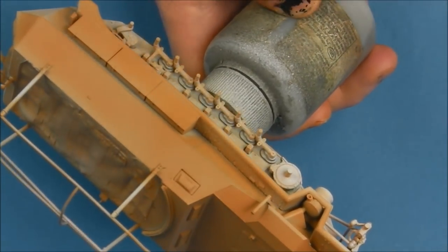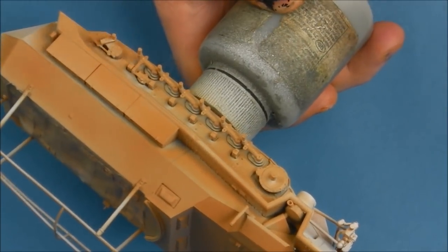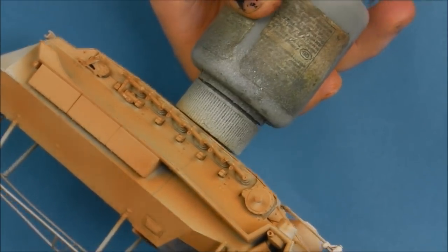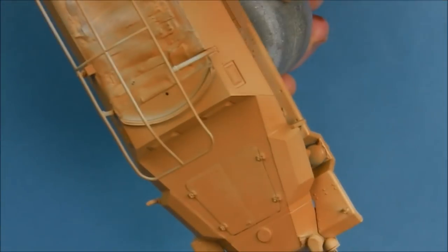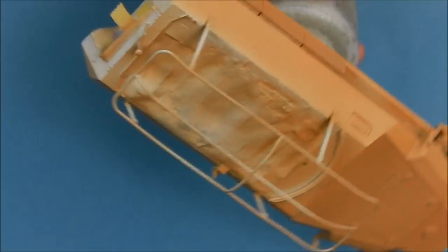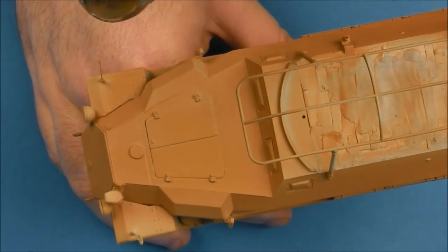I'm just slowly working my way around the model, building up this coat layer by layer. It's starting to get quite humid here in Ireland. We're starting to get some nice weather finally so it does mean our paint dries pretty quick, especially with this alcohol-based Tamiya paint. It does dry very fast.